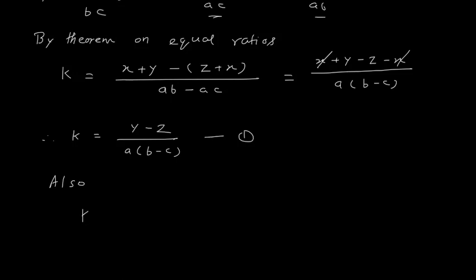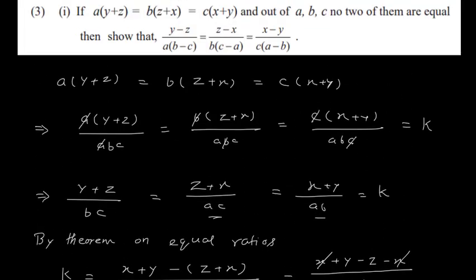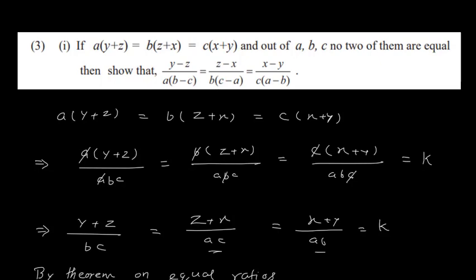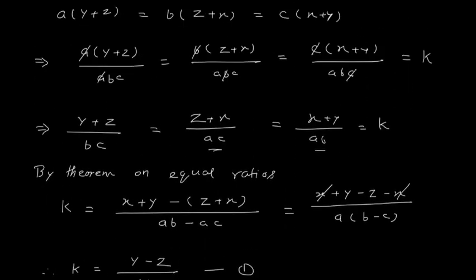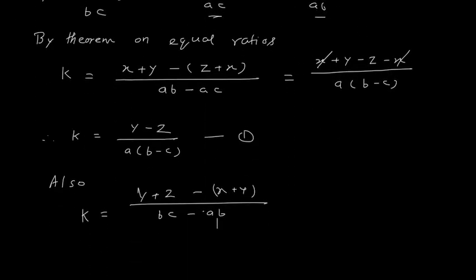Also, k = (bc − ba) combination: taking the first and last terms, (y+z) − (x+y) / (bc − ab). Opening the bracket, y cancels, giving numerator z−x. Denominator: taking b common gives b(c−a). This is equation 2.